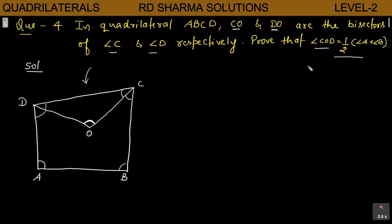तो बच्चो, इस तरह का कोई भी question जब भी आपसे पूछा जाए, तो आपको थोड़ा सा ध्यान देना है कि statement में आपसे क्या पूछा गया है. यहाँ पर Angle COD है — इसका simple सा मतलब है इस triangle में कोई न कोई rule apply करना है. Angle A और Angle B quadrilateral का part हैं, तो quadrilateral वाला कोई न कोई rule apply होगा. उसके बाद कुछ equations form होंगी और आप आसानी से इसको solve कर सकते हैं।